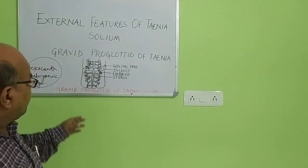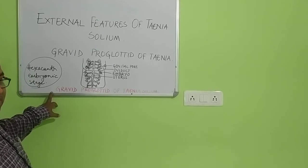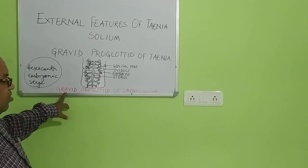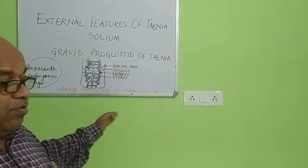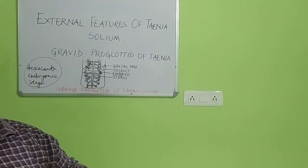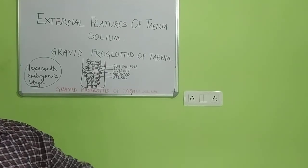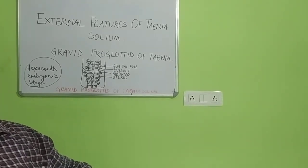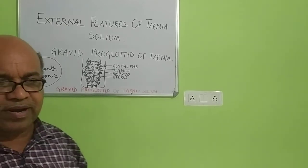My narration is ending here regarding the proglottid which is already gravid and so that is called as gravid proglottid. It arises from the mature proglottid. At the end, the mature proglottid turns into the gravid proglottid. Initially, young proglottids are found at the region of the neck; they come towards downward or towards the end of the strobila. Those mature proglottids which have completed the process of fertilization will be known as gravid proglottids.